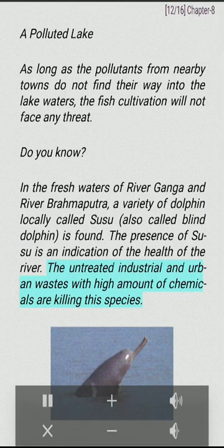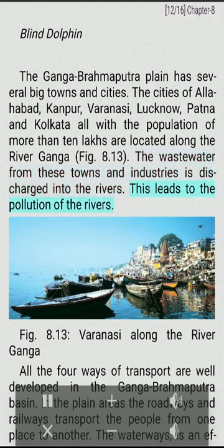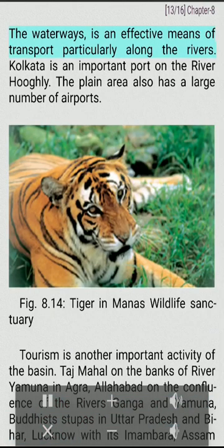The untreated industrial and urban wastes with high amounts of chemicals are killing the blind dolphin species. The Ganga Brahmaputra plain has several big towns and cities. The cities of Allahabad, Kanpur, Varanasi, Lucknow, Patna and Kolkata — all with a population of more than 10 lakhs — are located along the river. The wastewater from these towns and industries is discharged into the rivers, leading to the pollution of the rivers. The waterways are an effective means of transport, particularly along the rivers. Kolkata is an important port on the river Hugli.